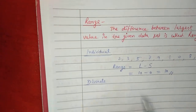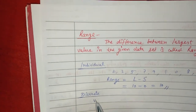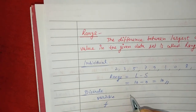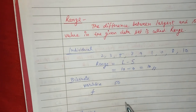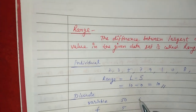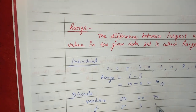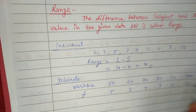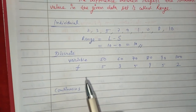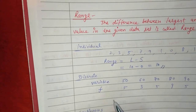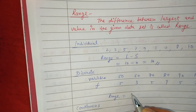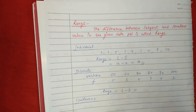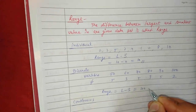Now we have a discrete type data. For example, we have a variable and a frequency. The variable values are 50 with frequency 5, 60 with frequency 3, 70 with frequency 5, 80 with frequency 9, 90 with frequency 5. This type of data is a discrete sort of data. The range formula is the same: L minus S. The largest variable is 90 and the smallest variable is 50, so the range is 40.